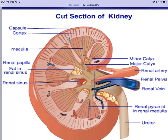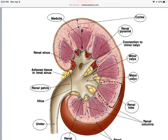We have the renal arteries and the renal veins. This diagram does a nice job showing where the cortex and the medulla are. Again: the pyramid, the papilla, the columns, the minor calyx, the major calyx, the ureter, and the pelvis. The kidney is kind of bent inward — that indentation is the hilus, which gives the kidney its bean shape.